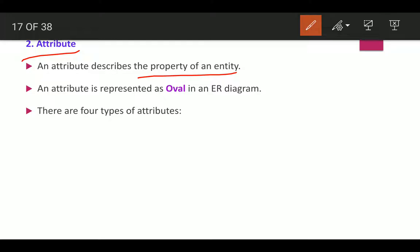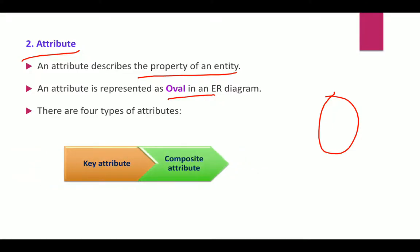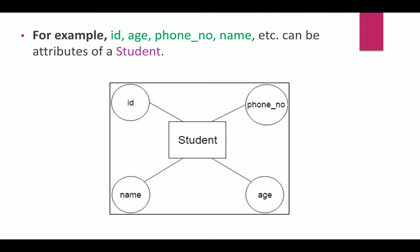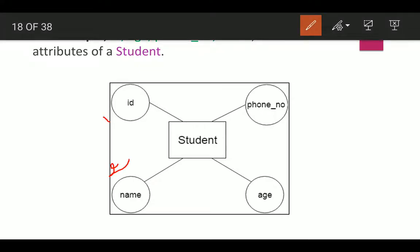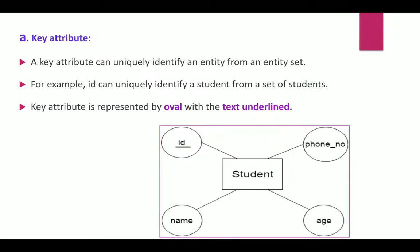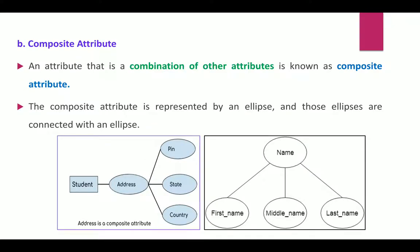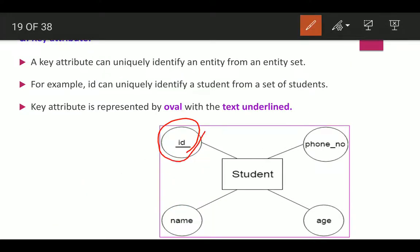An attribute describes the property of an entity and is represented as an oval in the ER diagram. There are four types of attributes: key attribute, composite attribute, multi-valued attribute, and derived attribute. For example, a student entity has four attributes: student ID, name, age, and phone number. The key attribute is student ID, which is depicted as an oval with the text underlined.